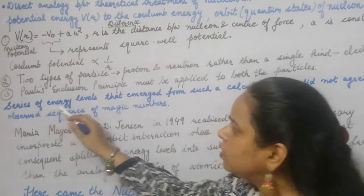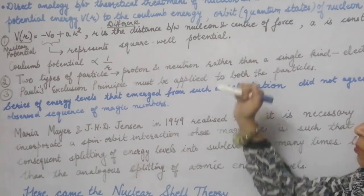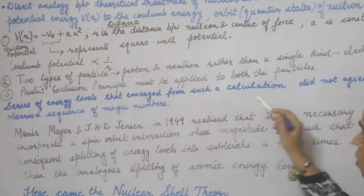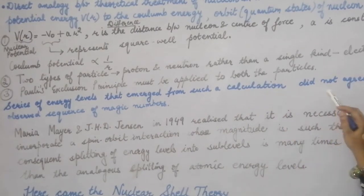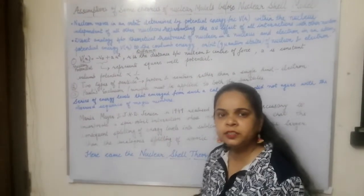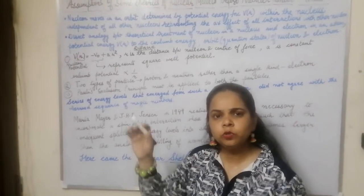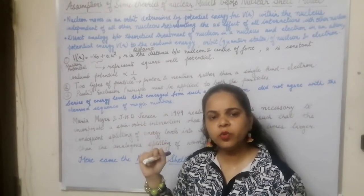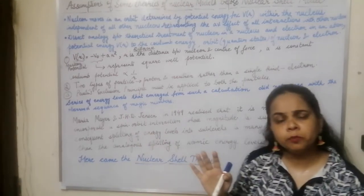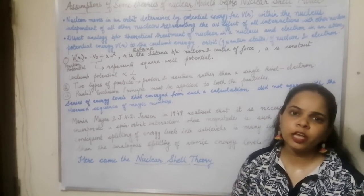The energy levels were calculated based on these assumptions, and what was found was that the energy levels that emerged from the calculations did not agree with the observed sequence of the magic numbers — 2, 8, 20, 50, 82, 126. The filling of the nucleons in the various shells did not match with the magic numbers, whereas the model proposed by the shell model was in complete agreement in justifying the magic numbers.